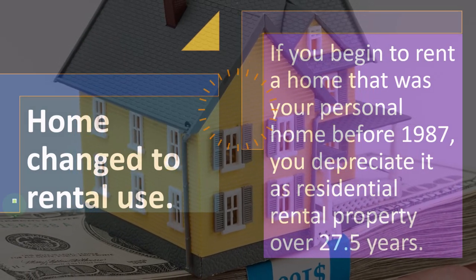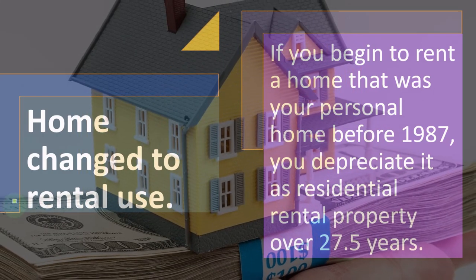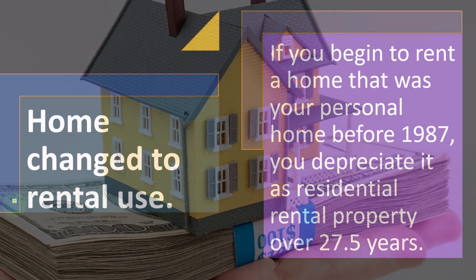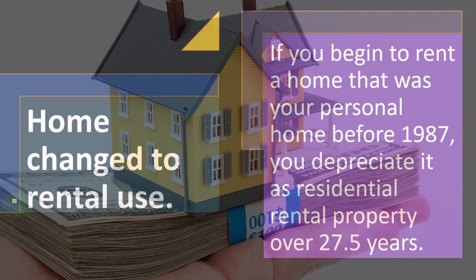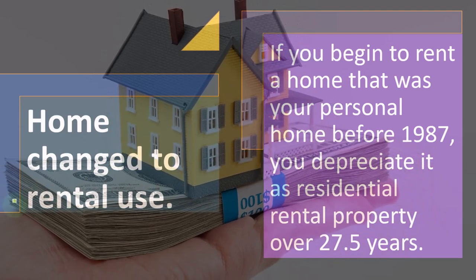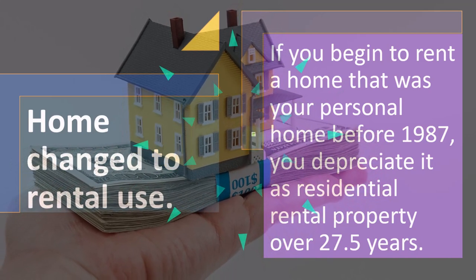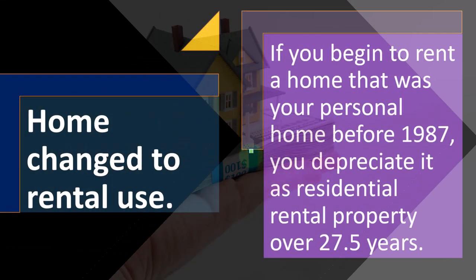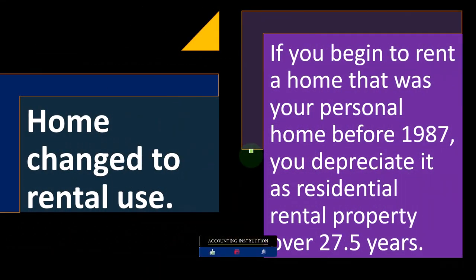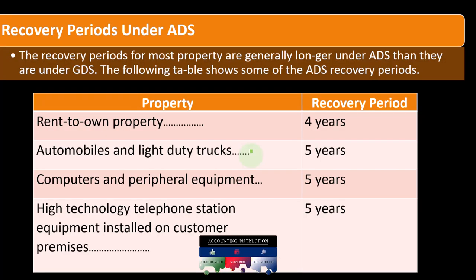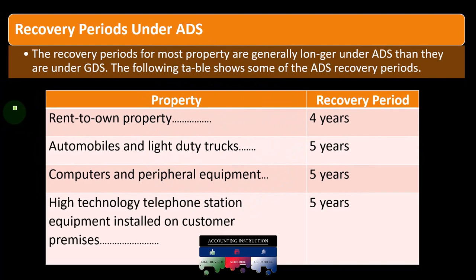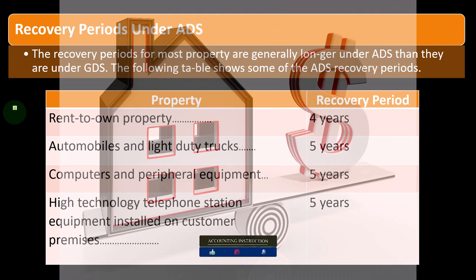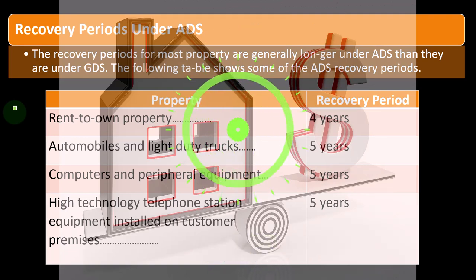Home changed to rental use: if you begin to rent a home that was your personal home before 1987, you depreciate it as residential rental property over 27.5 years. There is an issue with the basis — you need to figure out what the cost of the home is at the time of conversion. Recovery periods under ADS: the less common depreciation method. Recovery periods for most property are generally longer under ADS than under GDS.